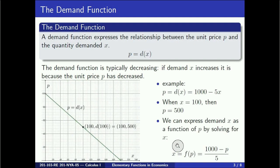This is illustrated on the following graph, where we show an example of a demand function that is a decreasing linear function given by the rule d(x) equals 1000 minus 5x dollars. Therefore, when the unit price is decreased by 5 dollars, the demand increases by 1.